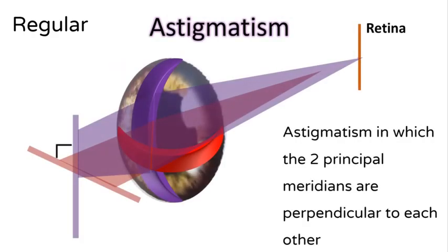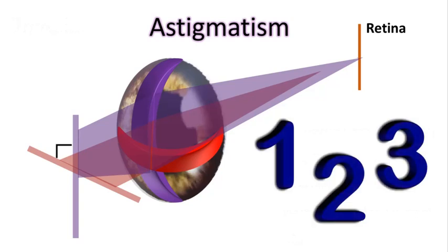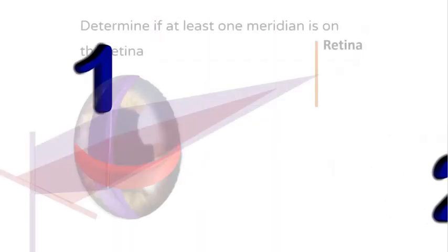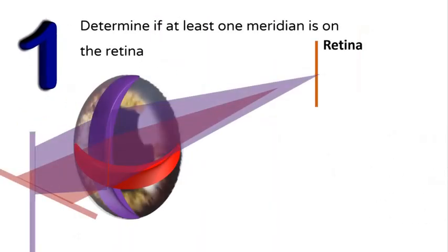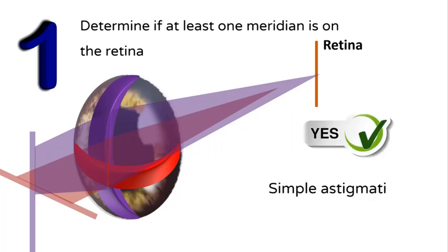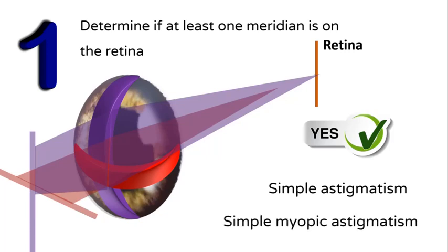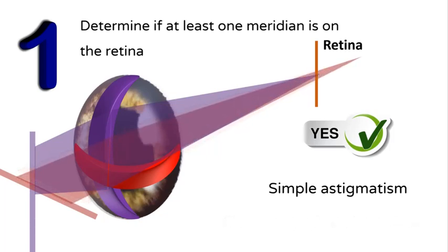So now the concept is clear. To determine the type of astigmatism, follow three easy steps. Step one: determine if at least one meridian is on the retina. If yes, this is simple astigmatism. If the other meridian focuses in front of the retina, it is simple myopic astigmatism; if it focuses behind the retina, it is simple hypermetropic astigmatism.